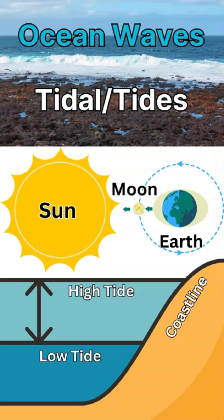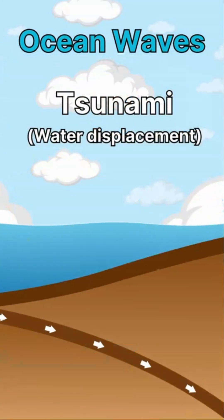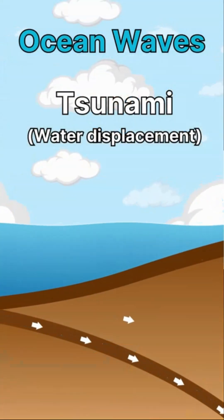The tides can fluctuate based on different ocean basins, based on the coastline, and based on the distance and strength of gravity.